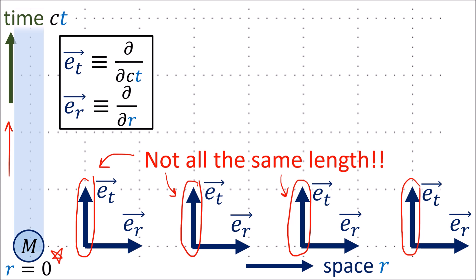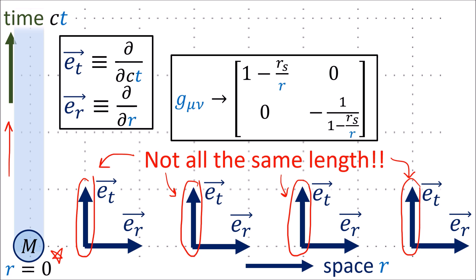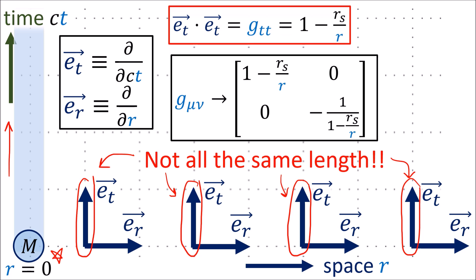In relativity, we should never trust our eyes or trust spacetime coordinates for making measurements. Instead, we need to trust the metric, which is the Schwarzschild metric in this case. The squared length of the et basis vector is et dot et, which equals the gtt component of the metric, which is 1 minus rs over r. So the length of all these time basis vectors depends on their r coordinate in spacetime.